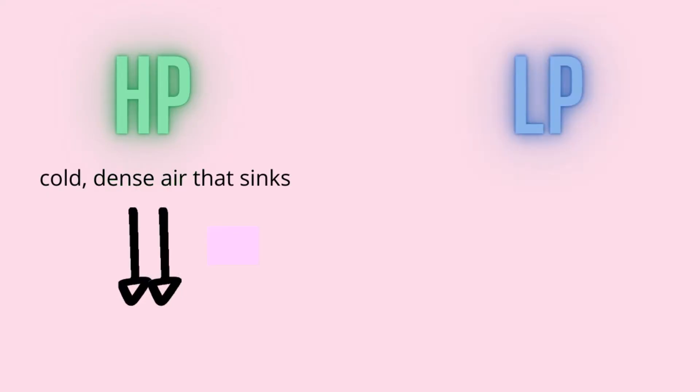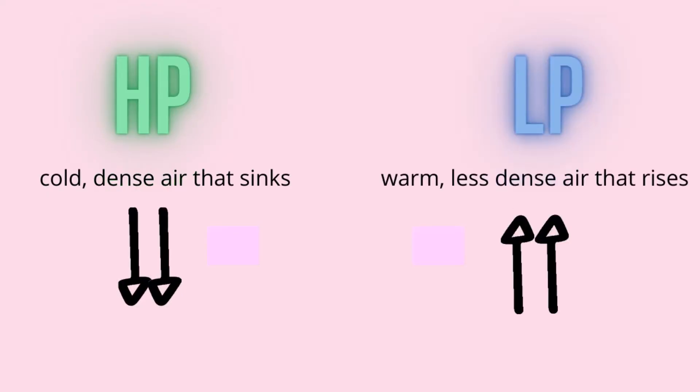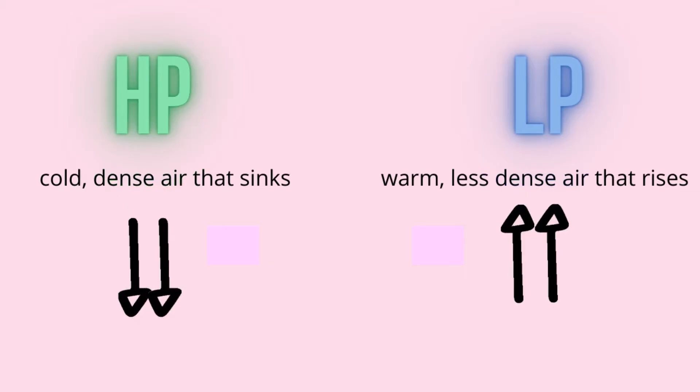We get two main types of pressure: high pressure and low pressure. High pressure cells are associated with cold, dense air that sinks, and low pressure cells are associated with warm, less dense air that rises.